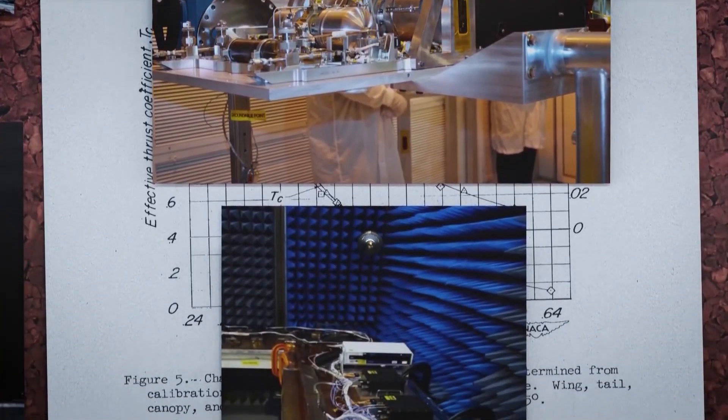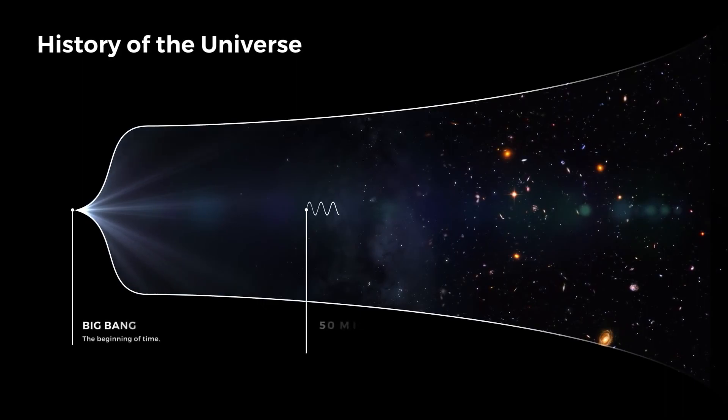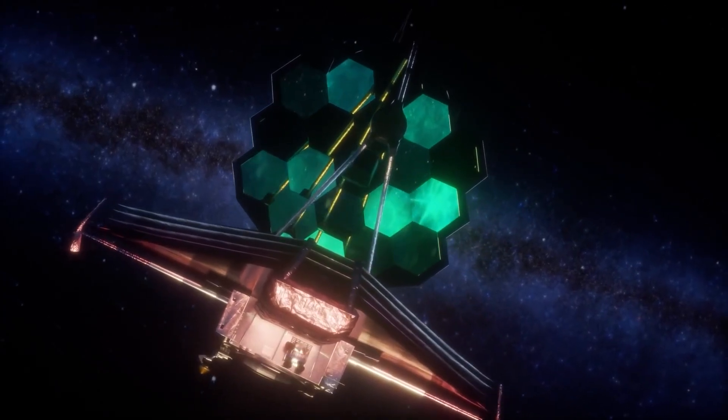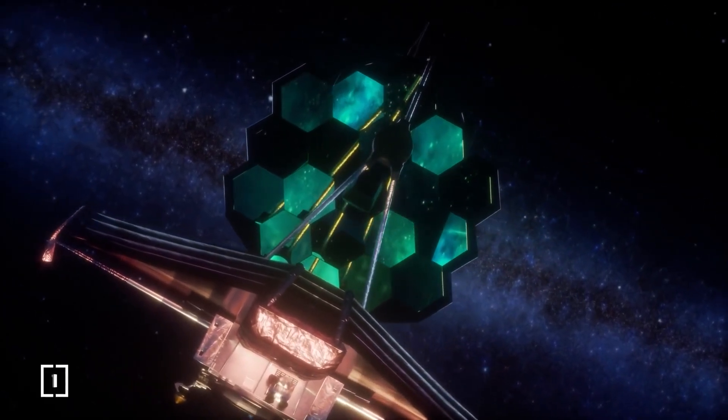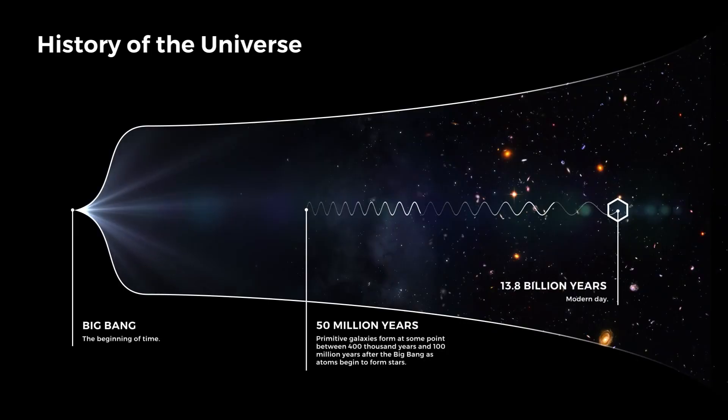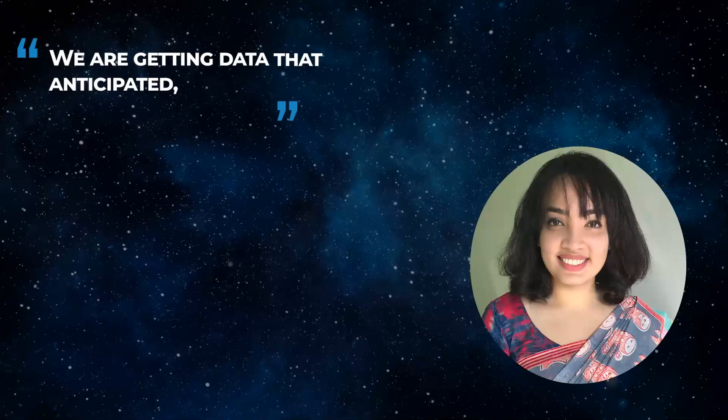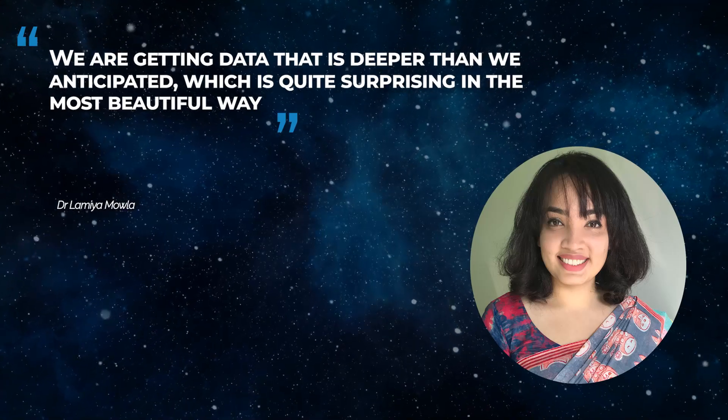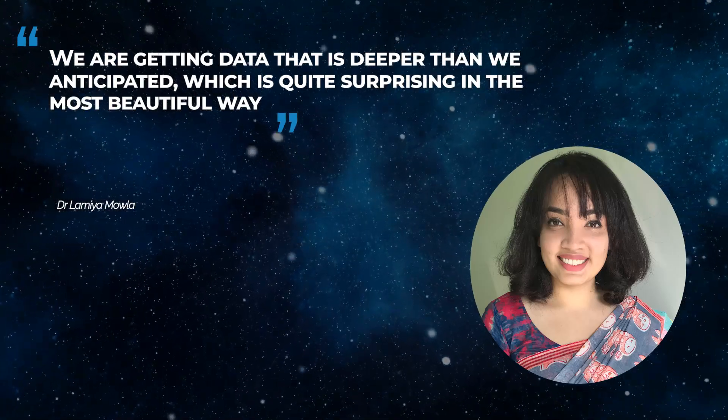The duo are referring to the fact that while the sparkler galaxy and its globular companions are distant enough to be seen when the universe was only about four billion years old, this is still comparatively close considering that the JWST was designed to see galaxies as they were just hundreds of millions of years after the Big Bang. As Mowla puts it, we are getting data that is deeper than we anticipated, which is quite surprising in the most beautiful way.